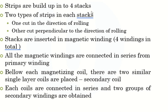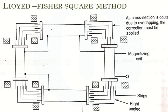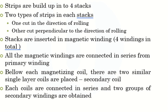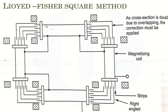Strips are built into four stacks. There are two types of strips in each stack: one in the direction of rolling and the other cut perpendicular to the direction of rolling.